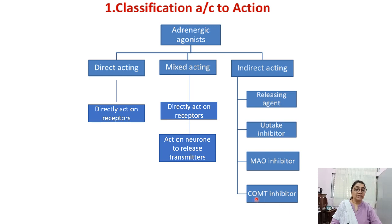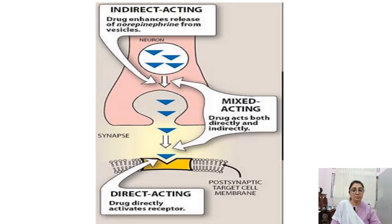Fourth is the COMT inhibitor — catechol-O-methyltransferase — which also degrades the neurotransmitter, and its inhibitor causes increased neurotransmitter at the site of action. Mixed acting drugs directly act on the receptor as well as act on the neuron to release neurotransmitters, so they have both actions — acting on receptors and enhancing release of neurotransmitter.